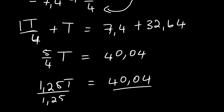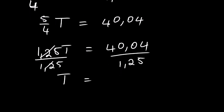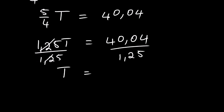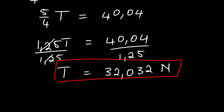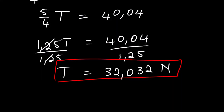Dividing both sides by 1.25, we get T equals 40.04 ÷ 1.25. The tension connecting the two blocks is 32.032 N, and rounded to two decimal places that is 32.03 N.